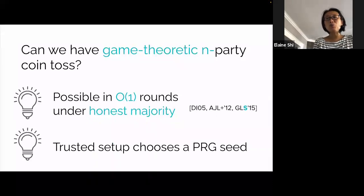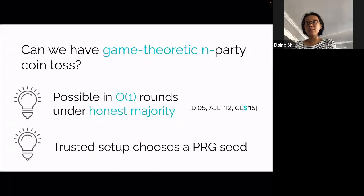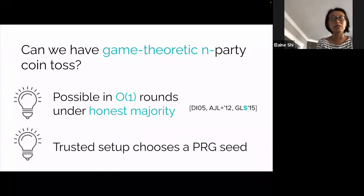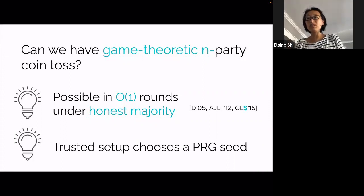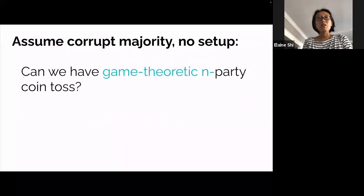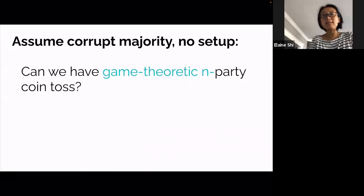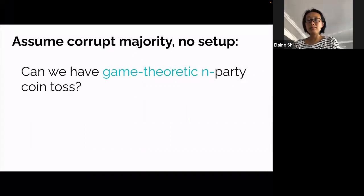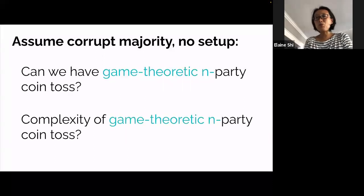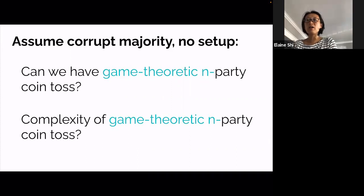Another trivial solution is to assume the problem away: suppose there's a trusted setup that can toss the coin for us, or maybe the trusted setup picks a pseudorandom seed and whenever we need a coin we stretch the seed. However, in a decentralized setting we often don't want to trust any single entity, and moreover we want the coin to be unpredictable in advance. With this in mind, let's refine the problem: assuming corrupt majority and no setup assumptions—that is, in the plain model—can we achieve game-theoretic fairness in multi-party coin toss? If we establish feasibility, the next question is the efficiency of these protocols, and in this talk we particularly care about round complexity.